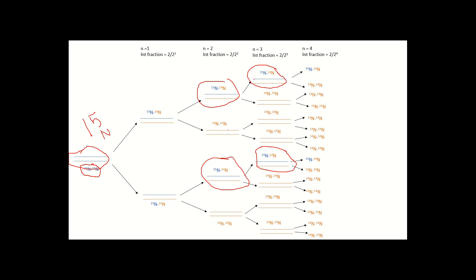In generation 4, the same pattern continues: there are 2 intermediate-density ¹⁵N/¹⁴N duplexes out of a total of 16 DNA molecules (2⁴). So the fraction of intermediate density DNA in generation 4 is 2 divided by 2⁴.